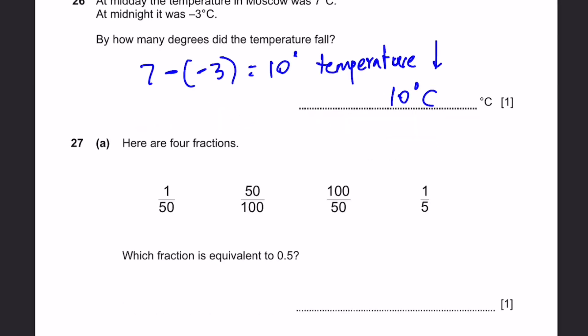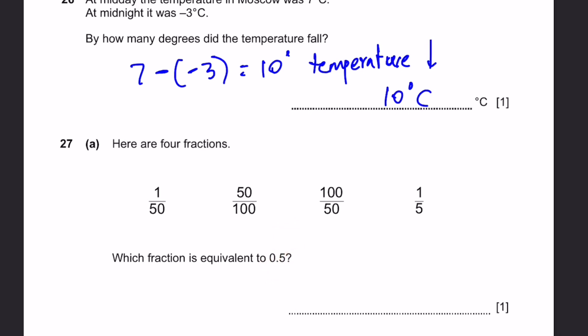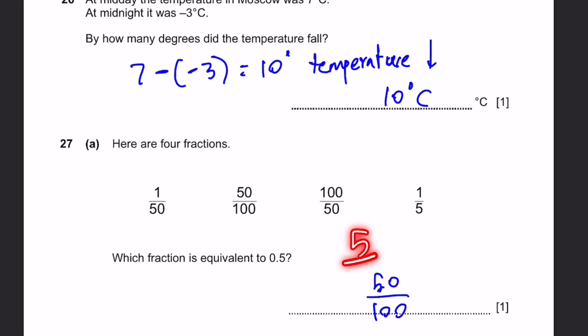Question 27A. Here are four fractions: 1 over 50, 50 over 100, 100 over 50, and 1 over 5. Which fraction equals 0.5? The answer is 50 over 100, because when simplified it becomes 5 over 10, which equals 0.5.